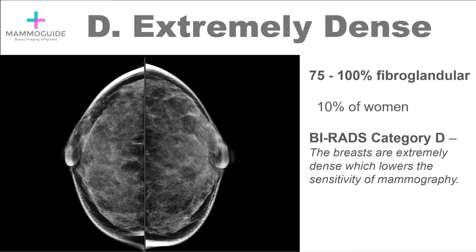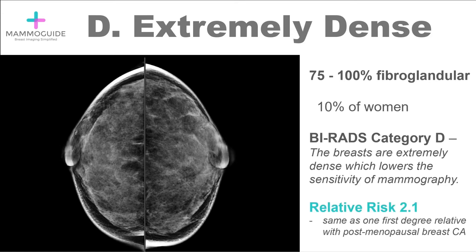The last category is category D — extremely dense. The official wording is the breasts are extremely dense, which lowers the sensitivity of mammography. This is when there's between 75% and 100% fibroglandular tissue within the breast. Fortunately, only about 10% of women have this type. Looking at the mammogram, you can see you'd be very limited trying to identify a breast cancer. This category confers an even higher relative risk, roughly the same as having one first-degree relative who developed breast cancer at a postmenopausal age.